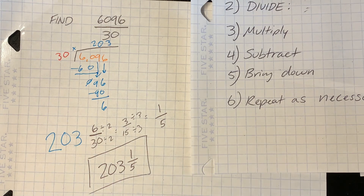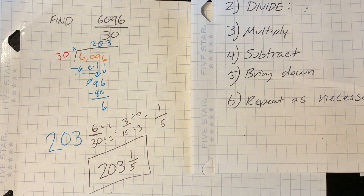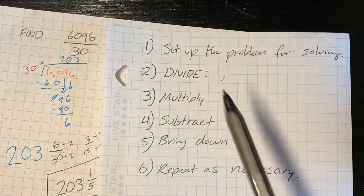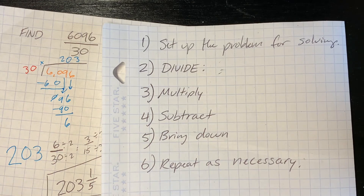By the end of this lesson you should successfully know how to use long division to divide whole numbers, write a remainder as a fraction in simplest form, and interpret quotients in real life problems. Remember the steps for dividing: set up the problem for solving, divide, multiply, subtract, bring it down, and repeat as necessary. We'll see you there, my friends.